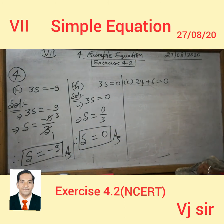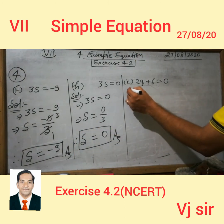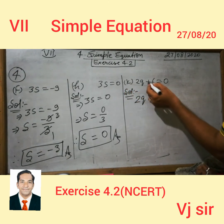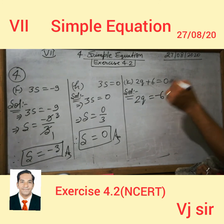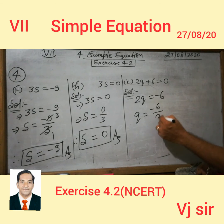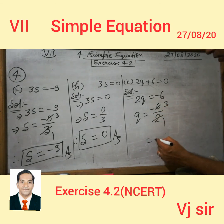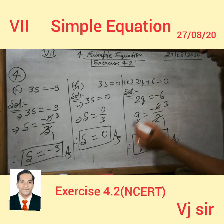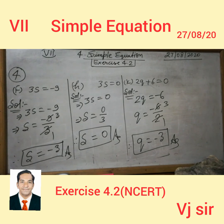Now in this question we will find the value of Q. 2Q is on its place, so it is minus plus 6. The value of Q is minus 6 upon 2, which equals minus 3. It means the value of Q is minus 3. Clear? This is so simple.